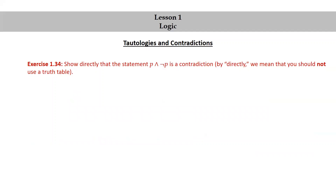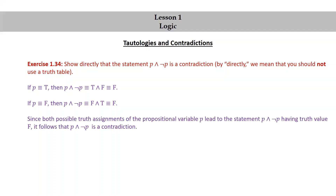Let's finish one more exercise: show directly that the statement p and not p is a contradiction. By directly, we mean you should not use a truth table — use the direct method. If p is true, then p and not p is logically equivalent to true and false, which is false. If p is false, then p and not p is logically equivalent to false and true, which is also false. Since both possible truth assignments of the propositional variable p lead to the statement p and not p having truth value false, it follows that p and not p is a contradiction.